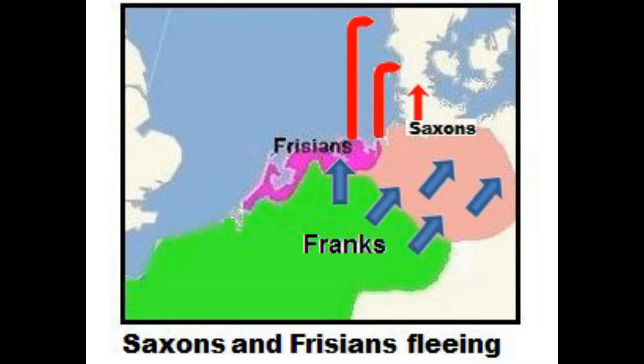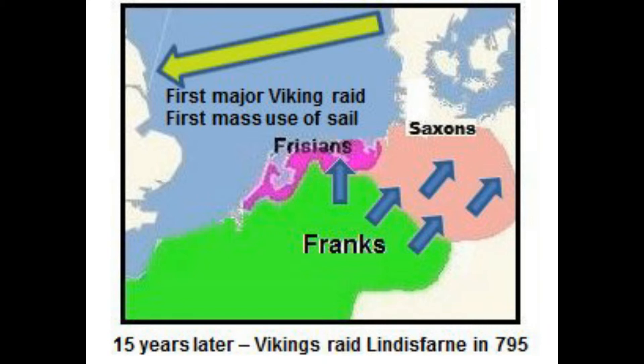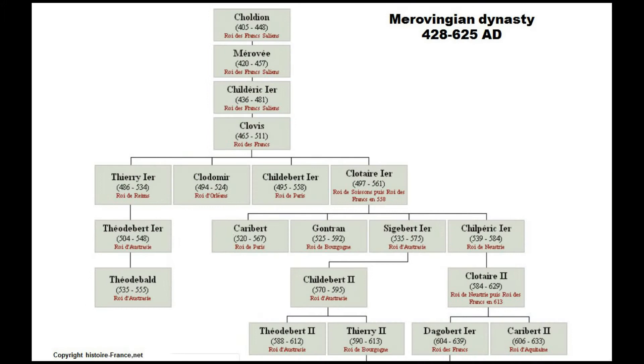Saxons and Frisians fleeing Charlemagne took refuge in the Scandinavian lands, and some of their descendants were almost certainly part of the initial Viking raids. The Lindisfarne raid in 795 shows that to begin with the Vikings only attacked and pillaged churches, monasteries and abbeys as revenge for the devastation by the Franks of the pagan places of worship and the pagan peoples. However, these raids very soon became generalised and Europe-wide.